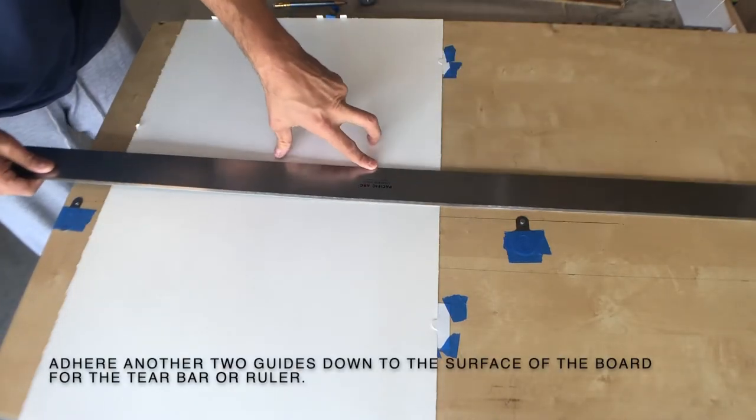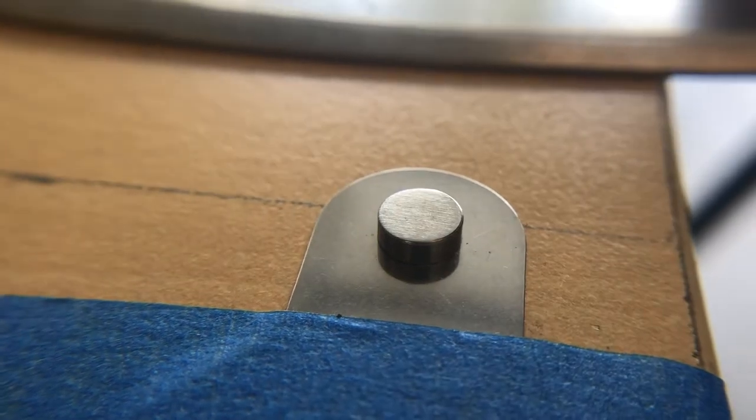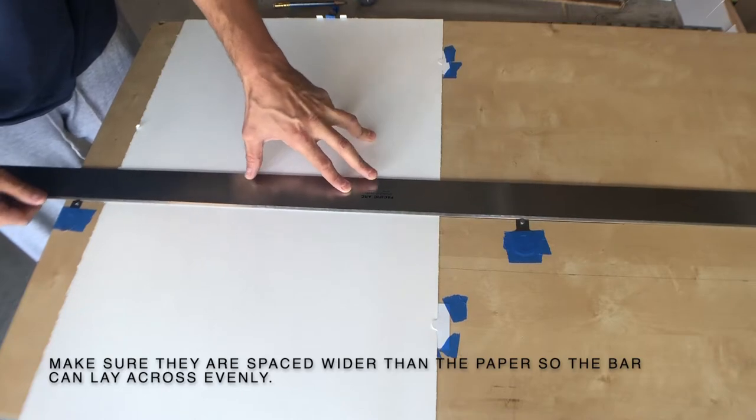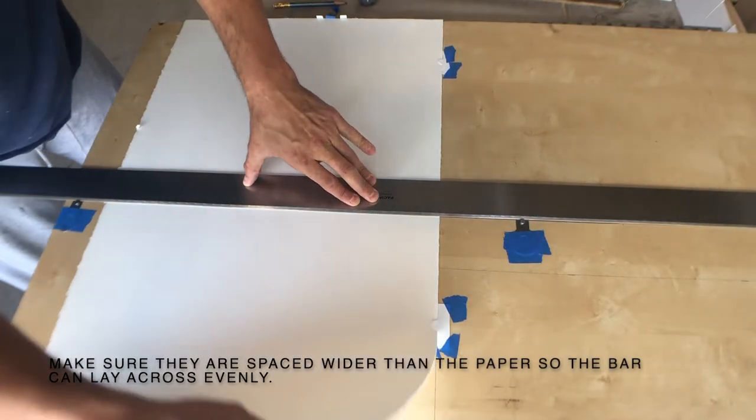Then I'll place hard-edged metal tabs to line up my tear bar. I've got to make sure that they're perfectly straight, so I always double-check and make sure everything is lined up so that it's perpendicular.